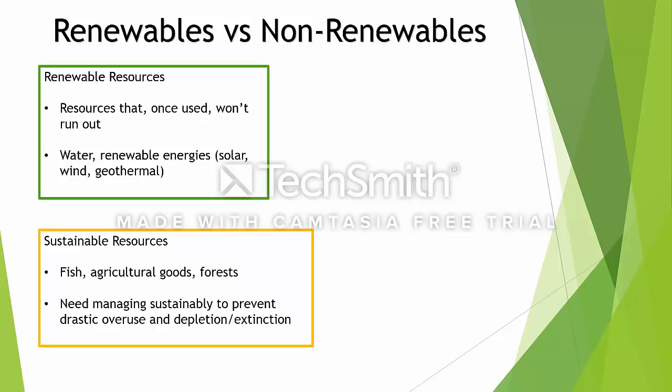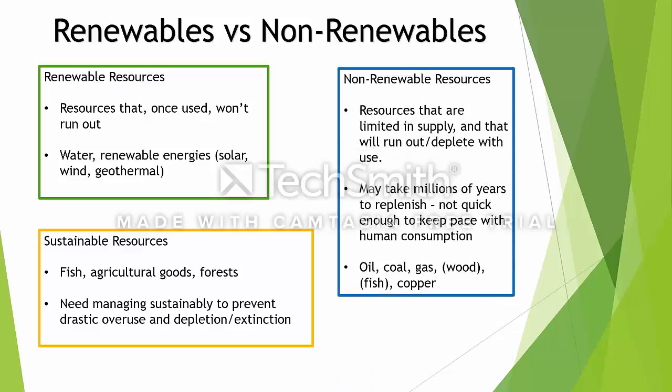A distinction must be made: some renewable resources are only renewable if they are sustainably managed — we call these sustainable resources. Things like fish, agricultural goods, and forests are technically renewable because they can be replenished. Fish can breed and forests can regrow over time. But they aren't classed as renewable if not sustainably managed — animals and plants can go extinct through overuse by humans. Sustainable management allows them to be classed as renewable; unsustainable management will deplete them forever.